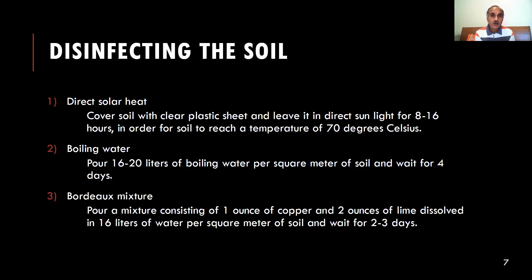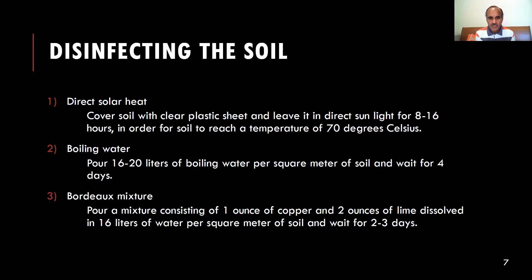The intense heat will kill most pathogenic organisms. Once the plastic sheeting is removed and the temperature of the soil has returned to normal, it can be used for planting. Boiling water: this method consists of pouring 16 to 20 liters of boiling water per square meter of soil. The recommendation is then to loosen the soil and wait for four days as the gases produced from the decomposition of dead microorganisms evaporate, at which point the soil is ready for planting. Application of Bordeaux mixture: a chemical mixture consisting of one ounce of copper and two ounces of lime dissolved in 16 liters of water is poured onto each square meter of soil. After two to three days, the soil is ready for use.